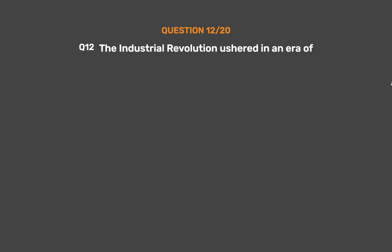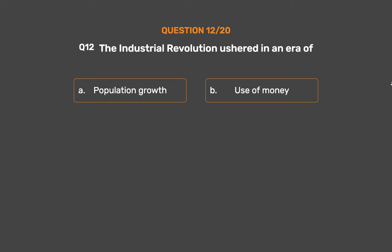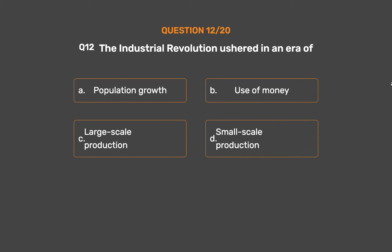Question No. 12. The industrial revolution ushered in an era of? Option A: Population growth. Option B: Use of money. Option C: Large scale production. Option D: Small scale production. The correct answer is Option C: Large scale production.